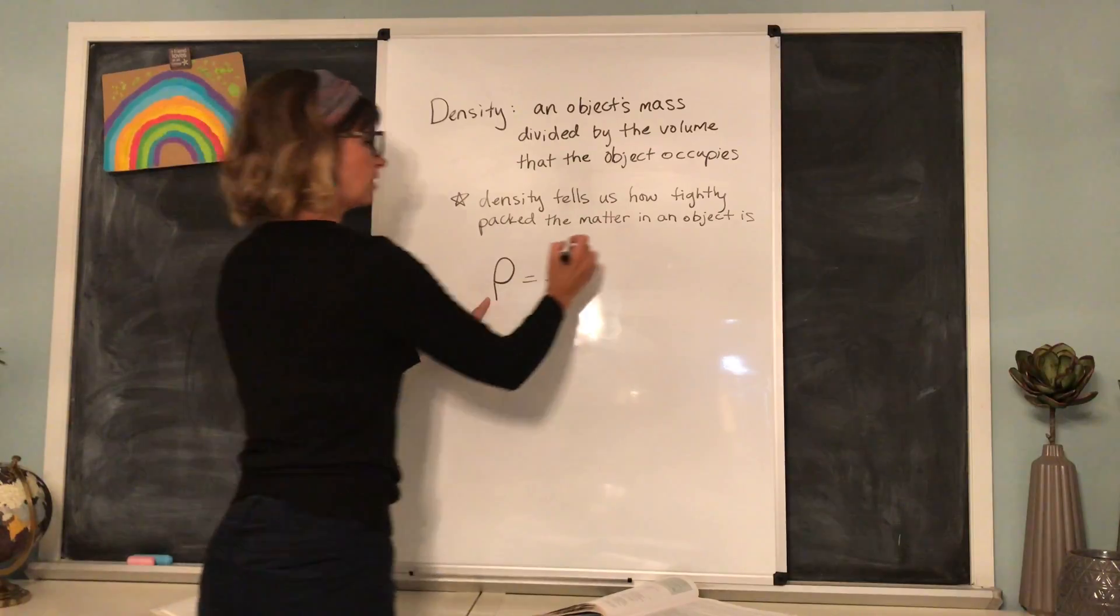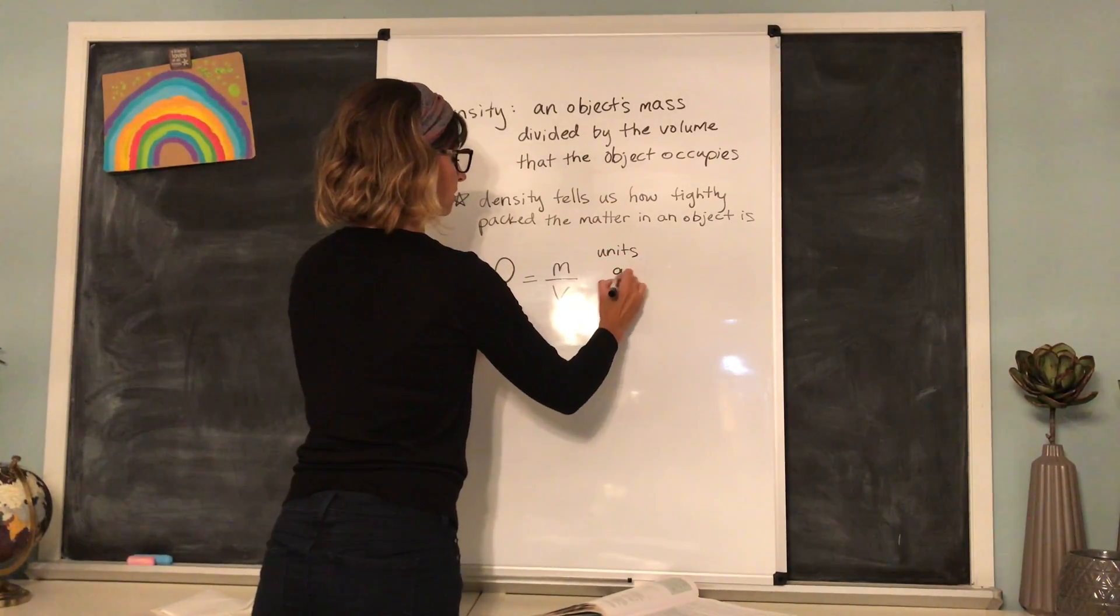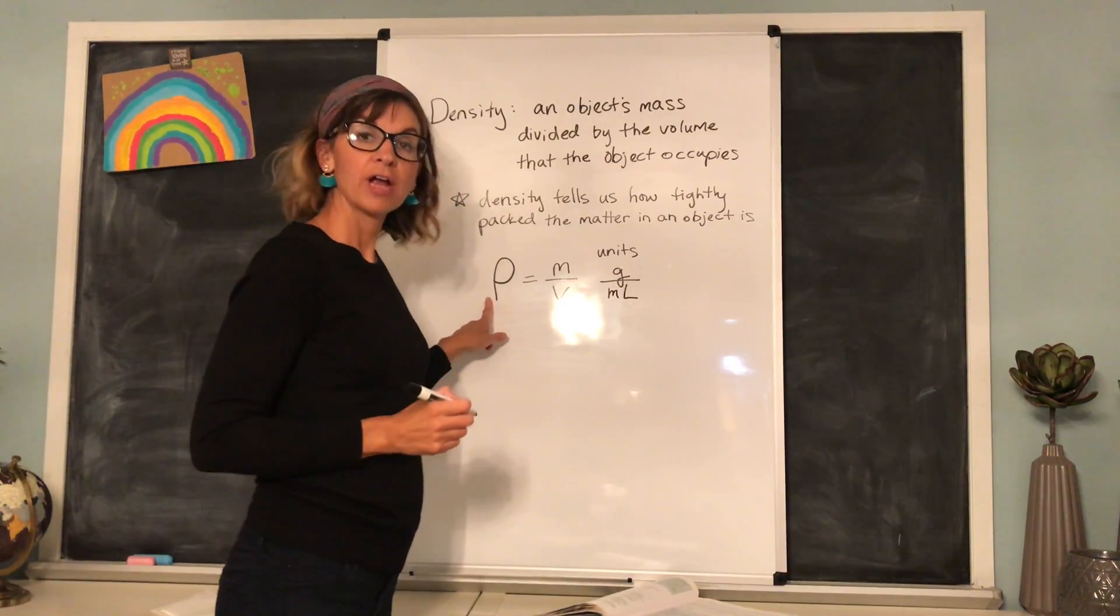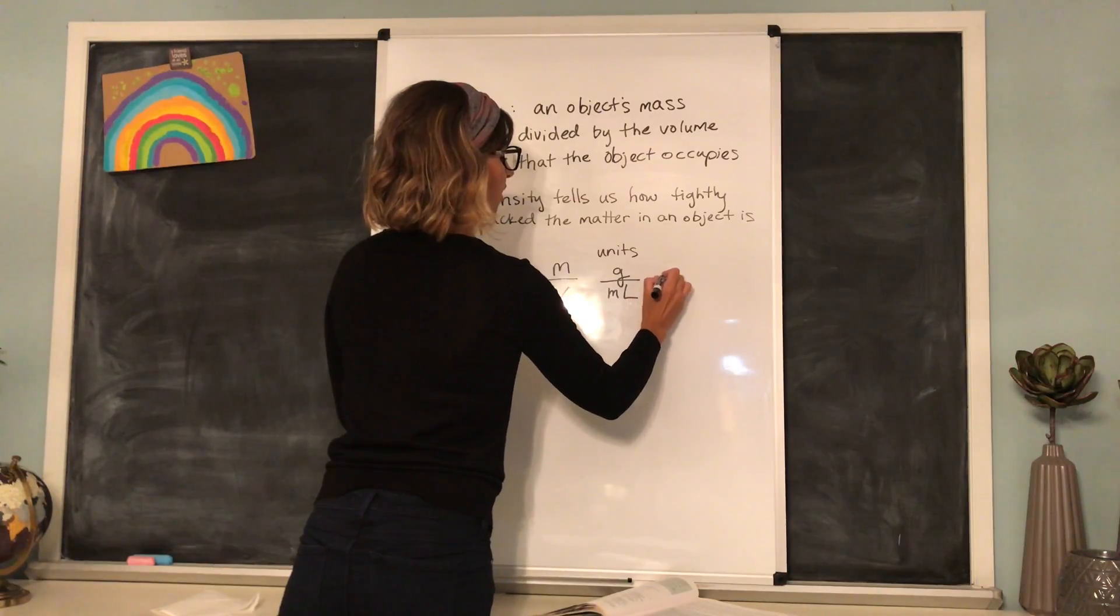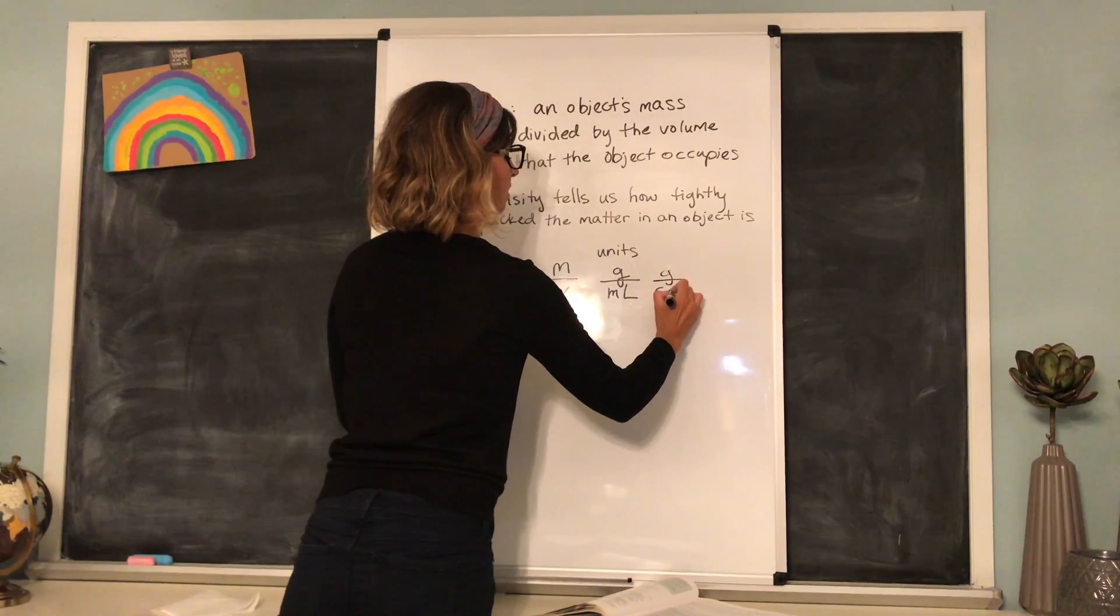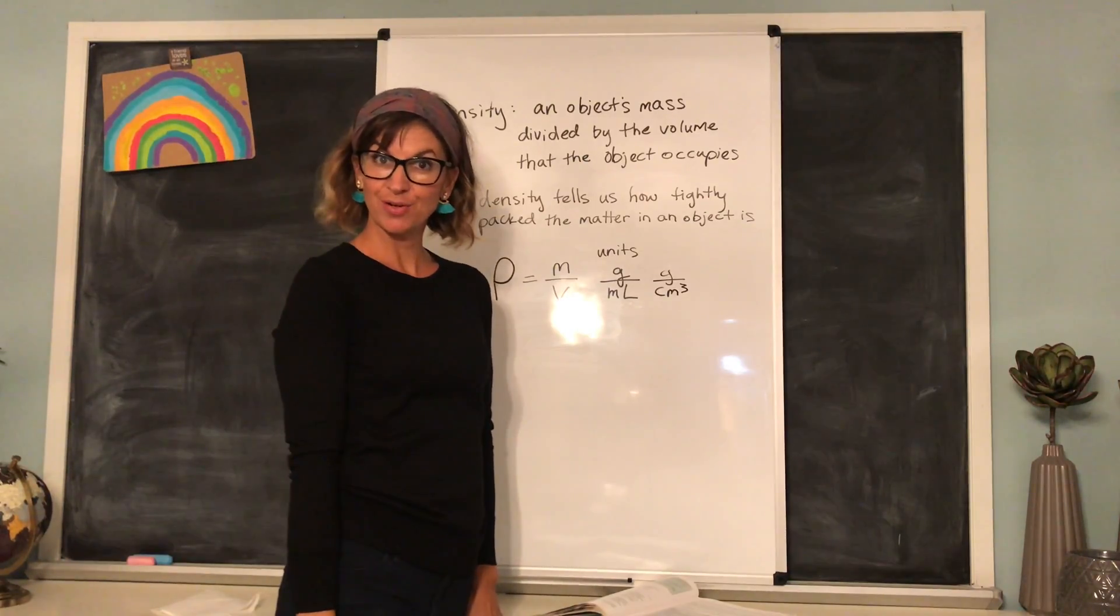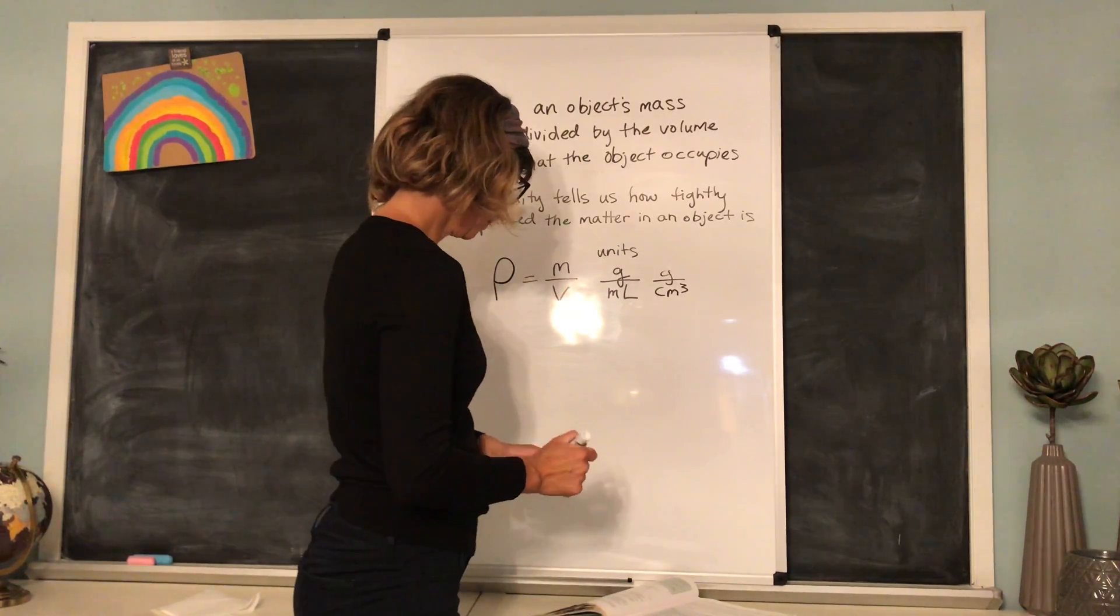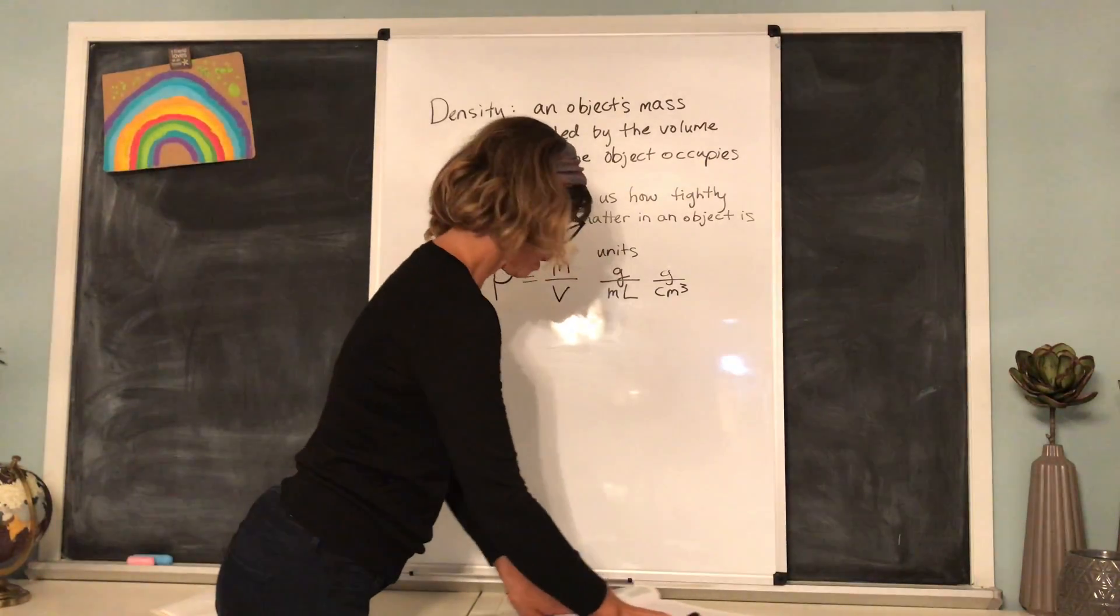Usually for our units, we're going to see grams per milliliter or as we learned last video, grams per centimeters cubed because one milliliter is the same as one centimeter cubed. So here's the formula for finding density. Let's take a look at...